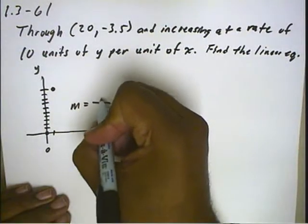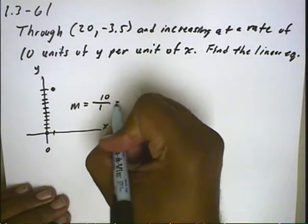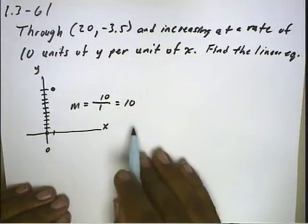This represents a slope that rises 10 and runs 1. So we have a slope of 10.